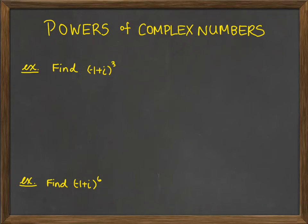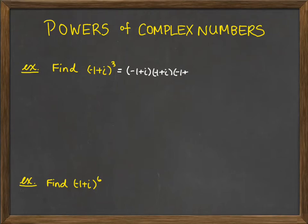One important concept from section 7.4 is finding powers of complex numbers. Here we have the following example: we've been asked to find negative 1 plus i cubed. Since we understand complex multiplication, this just means negative 1 plus i multiplied by itself three times. We can write that out and then perform the multiplication.